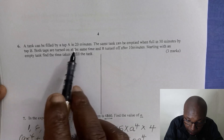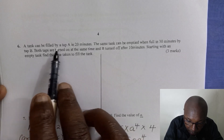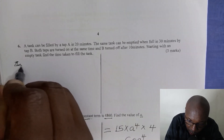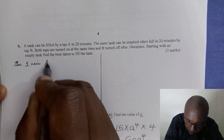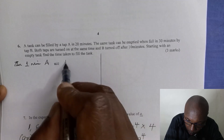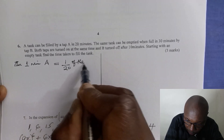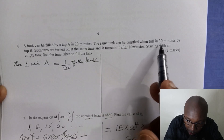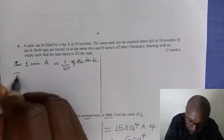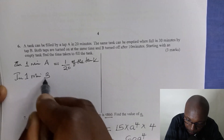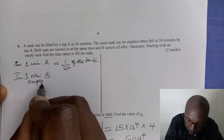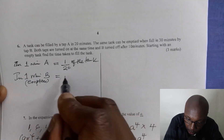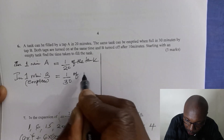We begin by finding the fraction filled by A. Since A can fill the tank in 20 minutes, in one minute A will fill 1 over 20 of the tank — that is a fraction of the tank. For tap B, which empties the tank in 30 minutes, in one minute it will empty 1 divided by 30 of the tank — that is a fraction of the tank.